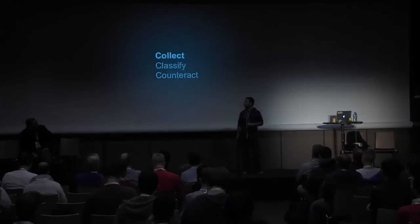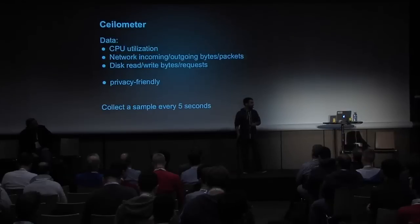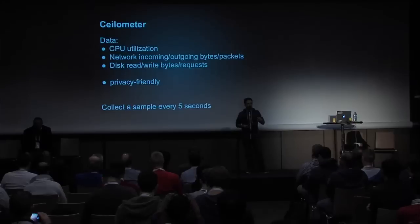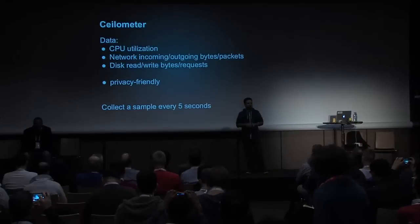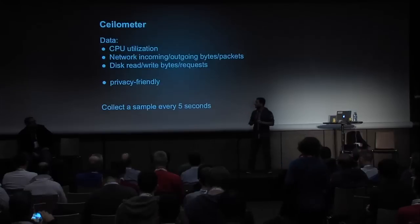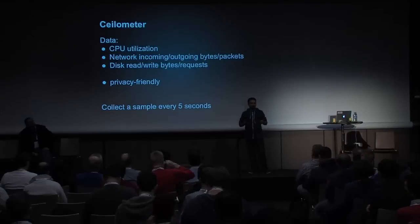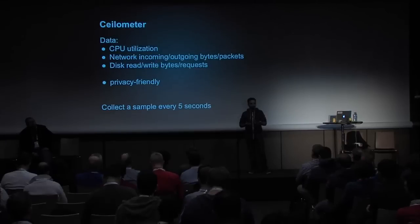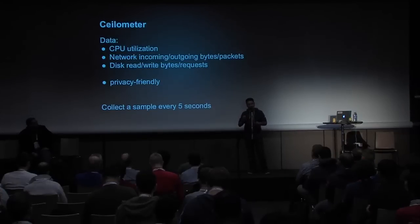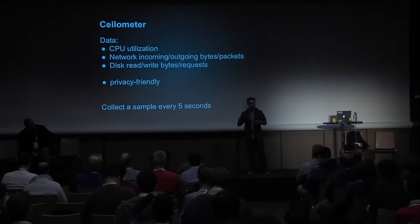First step: collect. That's where Ceilometer comes into play. Ceilometer provides us with many different meters. We wanted to use the minimal amount — only the default ones, not changing too many configurations. So we get CPU utilization, network information, and disk information, which is privacy-friendly data. You get aggregates, you get numbers — you don't have access to the user's data, so you are not spying on them. For the purpose of the investigation, we changed the collection rate to five seconds so we could experiment with different rates. In production, you probably have a bit more than that.